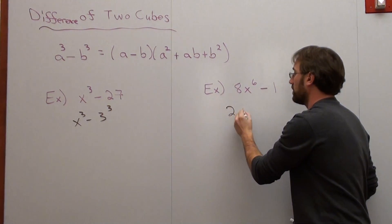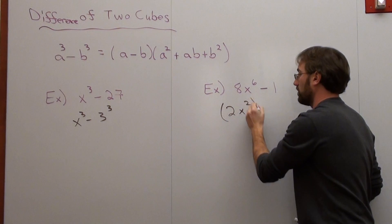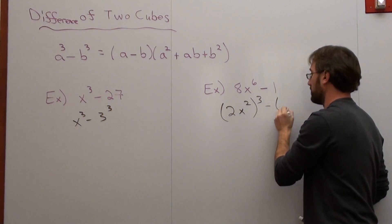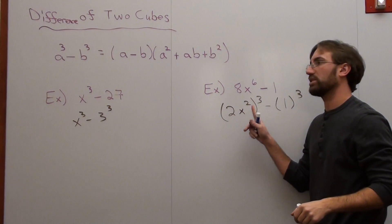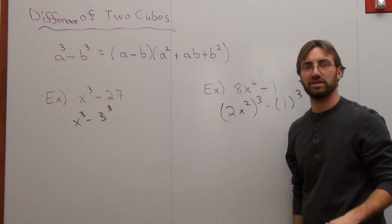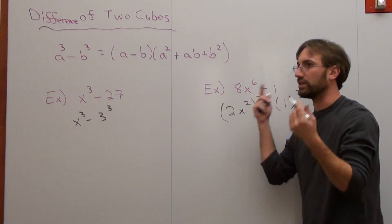And this one is 2x squared to the third power minus 1 cubed. That's because 2 times 2 times 2 is 8, and x squared times x squared times x squared is x to the sixth, or x squared to the third is x to the sixth.